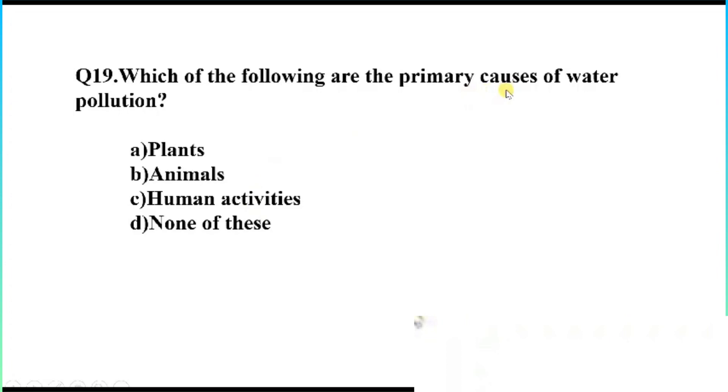Question number 19. Which of the following are the primary causes of water pollution? Option A, plants. B, animals. C, human activities. D, none of these. The right answer, Option C, human activities.